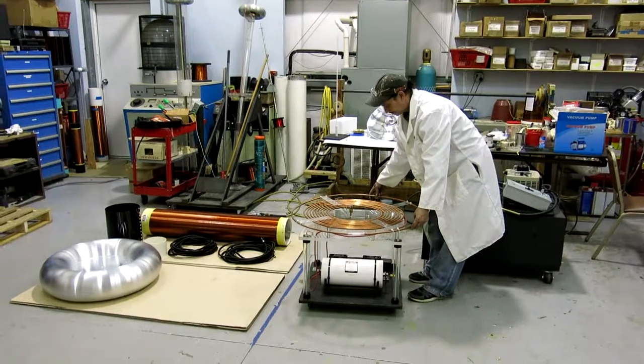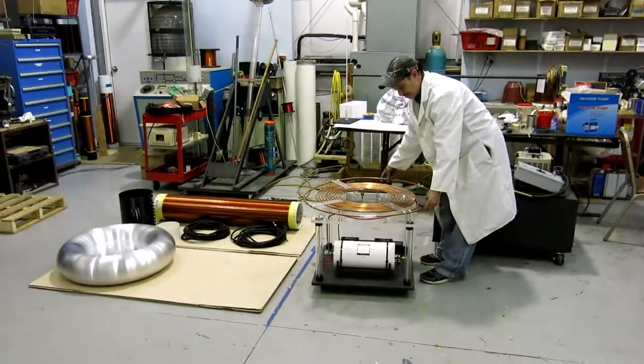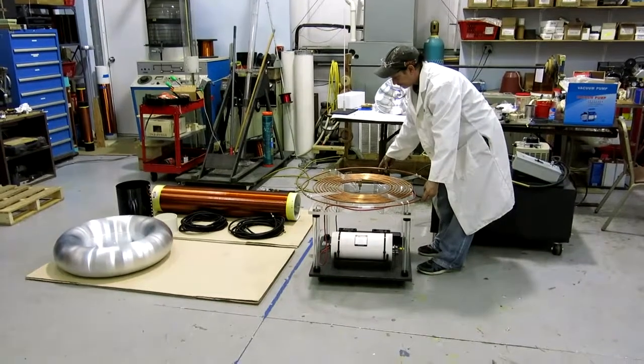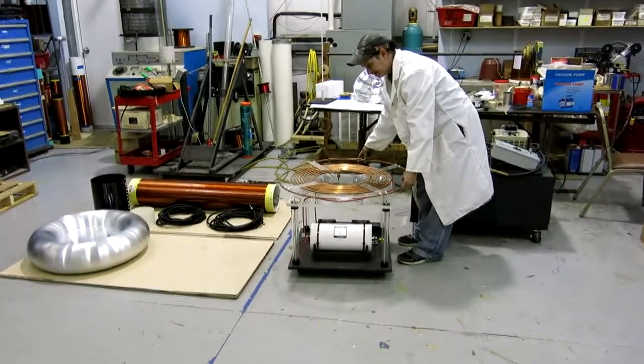Okay guys, so this is the BTC-70 Tesla coil. This is how you will be receiving it when you open it up out of your crate. This is what the individual parts will be, so we'll go from here on the setup and show you how to put it together.